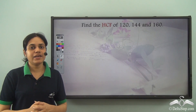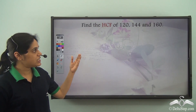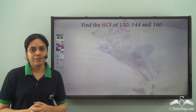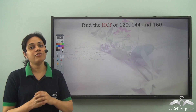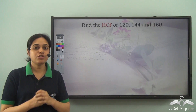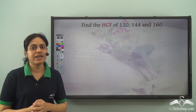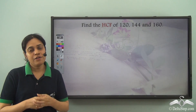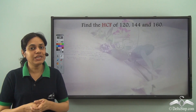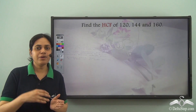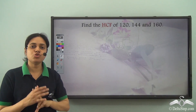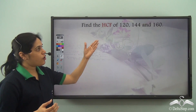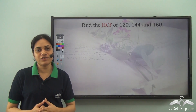Now I need to find the HCF of 120, 144 and 160, but we see that we have not just two but three numbers here. So how do we find the HCF using the long division method? We know that we can only divide one number by another number, so we can use just two numbers. So how do we find the HCF of three numbers using the long division method?